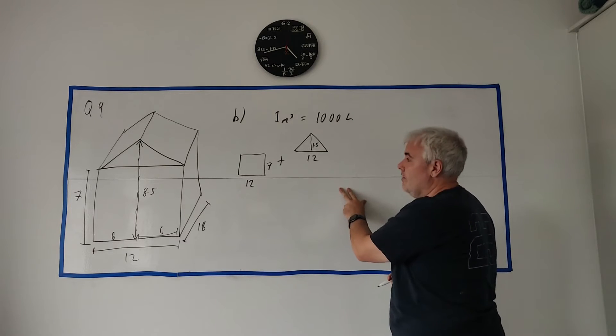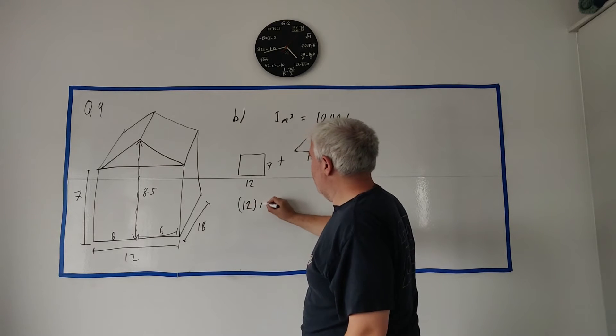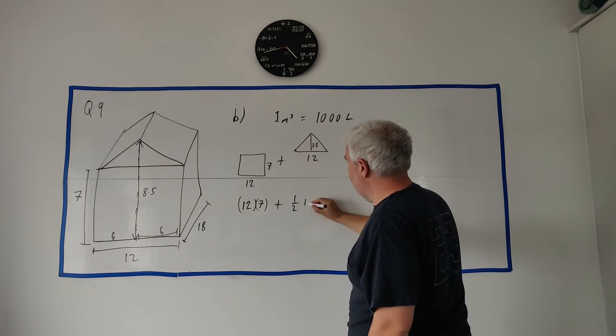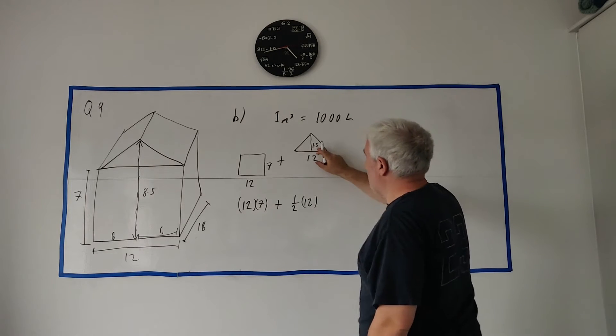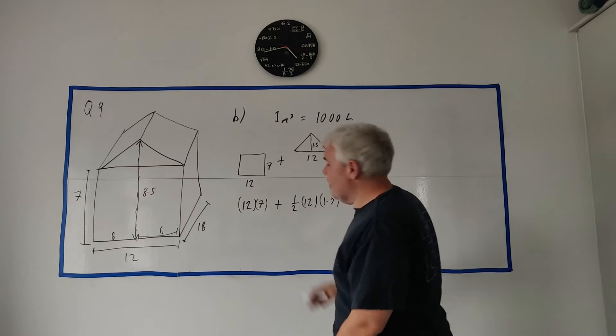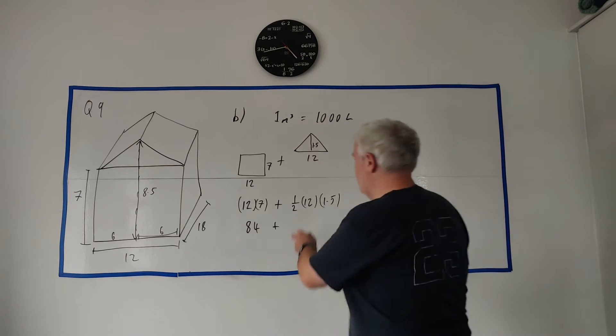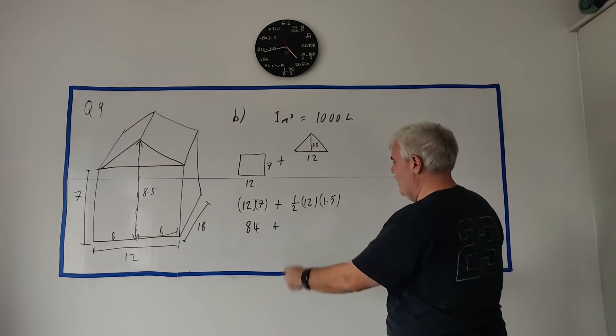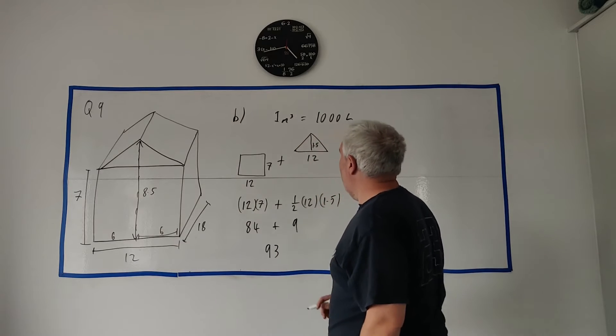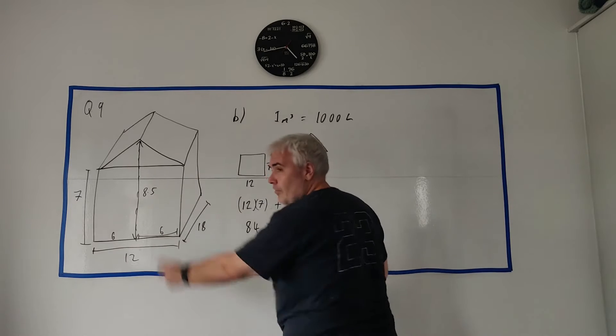So we can do both of these. These are both simple area questions. This one's 12 times 7, plus this one is a half, the base, times the perpendicular height, 1.5. Do each of these separately, or do them all at once on a calculator. We get 84, plus that's 6 times 1.5 is 9. Add these together, we get 93. So, that's 93 meters squared, because we're only doing the area first.